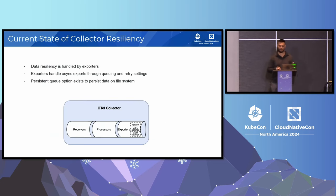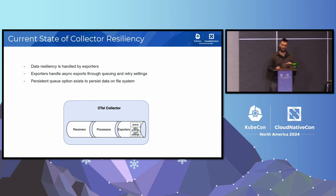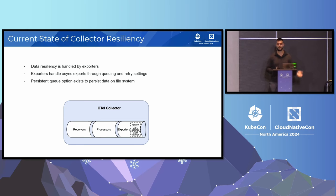To talk about the current state of resiliency within the collector, especially when it comes to permanent downstream failures: data resiliency is exclusively handled by exporters. Exporters are fully responsible for ensuring that our data successfully makes it to its target destination. Exporters tend to have some out-of-the-box features that benefit resiliency, like retry settings, a memory queue, and an optional persistent queue. But all of those are more geared towards temporary errors, like rate limits or timeouts. In the case of the persistent queue, if my collector crashes and I have data in that queue, when the collector spins back up that data won't be lost. But none of these really address the issue of downstream failures — how do I prevent a failing downstream service from causing all of my data to be lost?